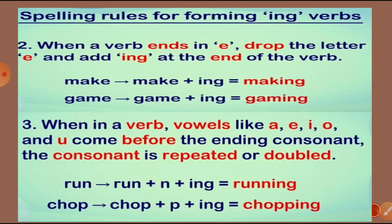To describe an action that is happening now, we use the present continuous tense. We form this by using am, is, and are, and adding ING to the base form of the verb. So the ING words are doing words or verbs. They tell us what is happening now, in the present.